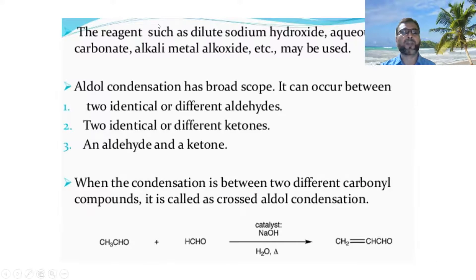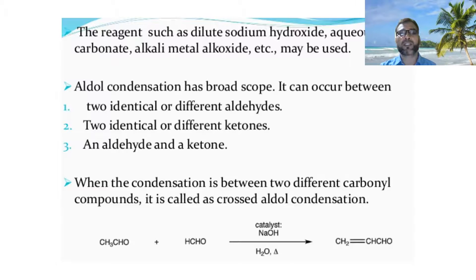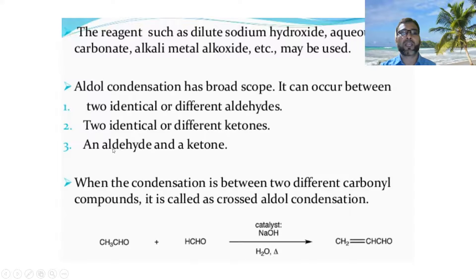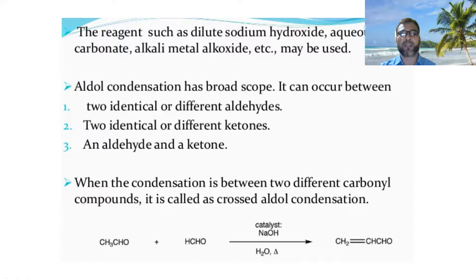The reagents such as dilute sodium hydroxide, aqueous alkali carbonate, or alkali metal oxide may be used. Aldol condensation has broad scope. It can occur between two identical or different aldehydes which contain alpha-hydrogens, two identical or different ketones which contain alpha-hydrogens, and between an aldehyde and a ketone. So, when the condensation is between two different carbonyl compounds, it is called a cross-aldol condensation.